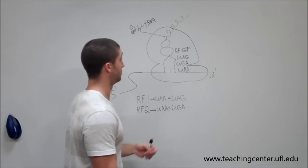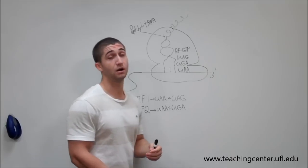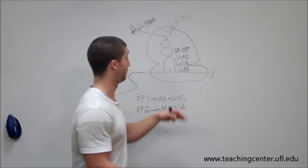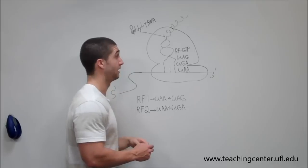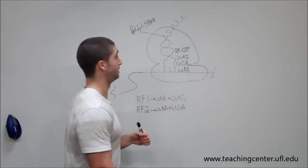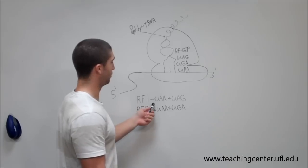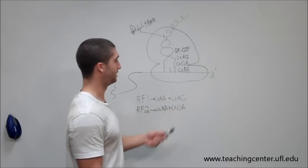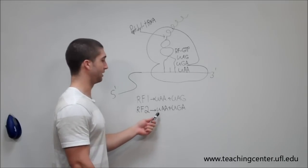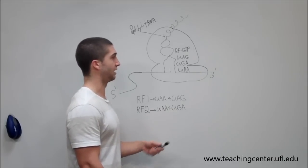So the ribosome comes across one of those and instead of binding a tRNA, since there are no tRNAs that can recognize any of those stop codons, it binds a release factor along with GTP. So you'll have release factor one, which recognizes UAA and UAG stop codons, RF2 recognizes UAA and UGA stop codons.